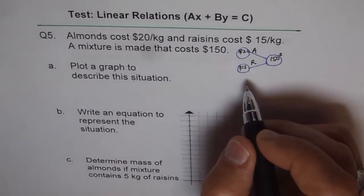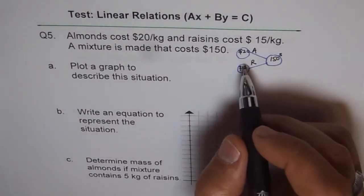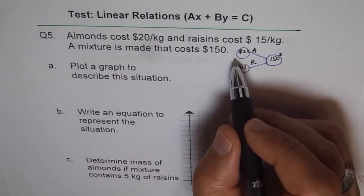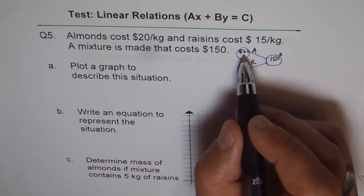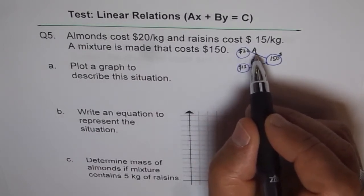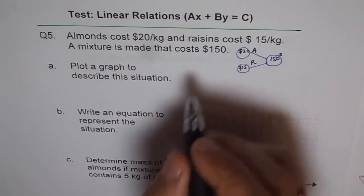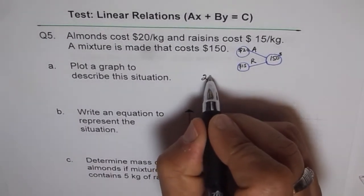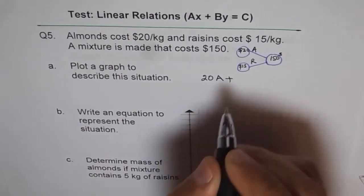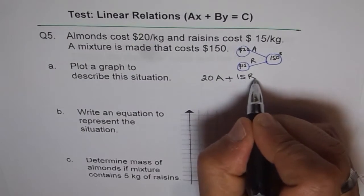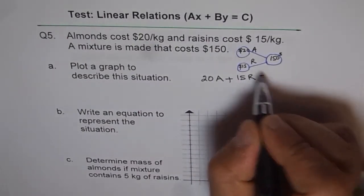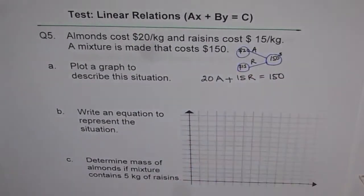Now if that is the case, then what is going to be the cost? Cost will be rate times the weight or mass. So we can write this as 20 times A plus 15 times R should be equal to the total cost of $150. So that gives us the equation.